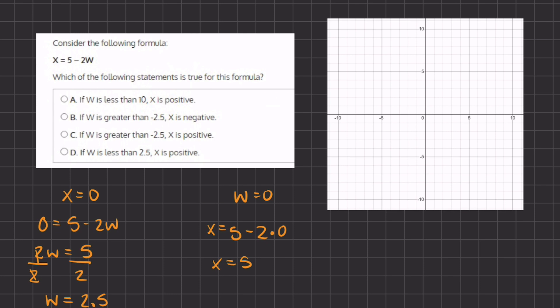Alright, so now let's plot these two points. And because w is a function of x, so w is going to be on the x-axis and x is going to be on the y-axis. Alright, so if we take our first point, 2.5, 0, that's going to be right over here. That's going to be our first point.